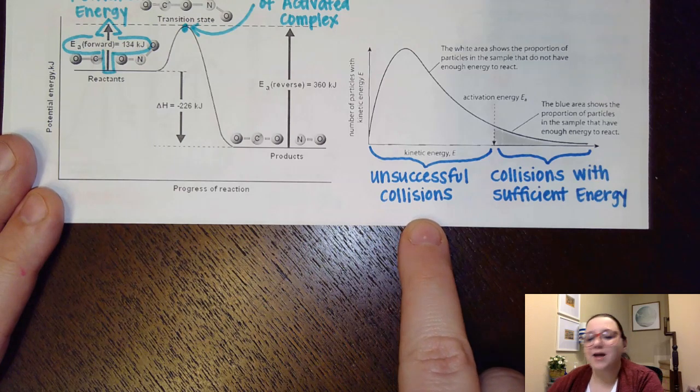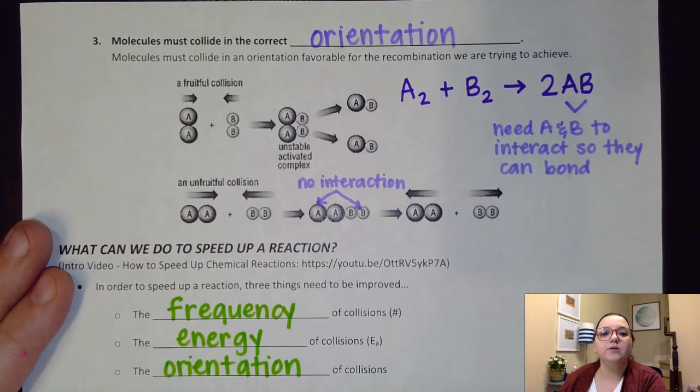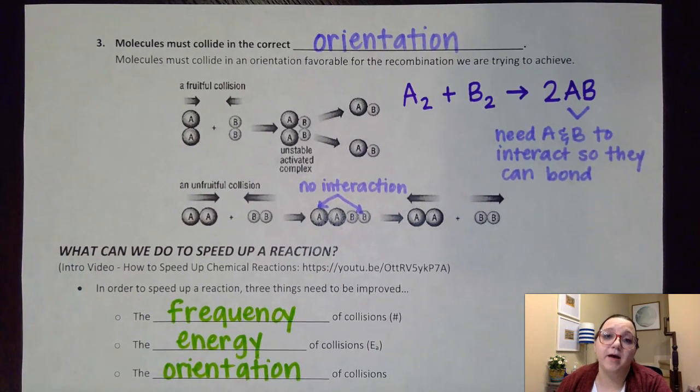Okay, all right, there's one more point to our collision theory and that is that molecules must collide in the correct orientation. Keep in mind that if I'm trying to make a new bond between two substances, I kind of need those two substances to interact with each other.